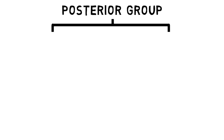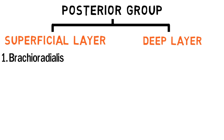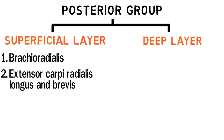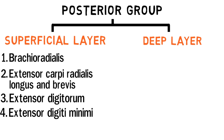The muscles of the posterior group are also divided into two subgroups, same as the anterior group. The muscles of the superficial layer in the posterior group include brachioradialis, extensor carpi radialis longus and brevis, extensor digitorum, extensor digiti minimi, and extensor carpi ulnaris.